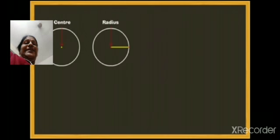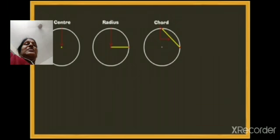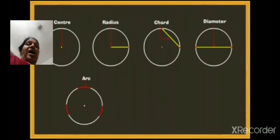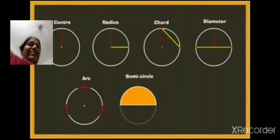Let us do a recap of the parts of a circle: center, radius, chord, diameter, arc, semicircle, and circumference.